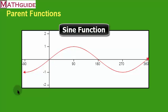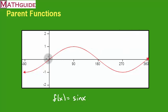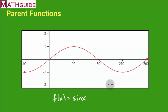Our next parent function is called a sine curve — a trigonometric function. It goes on forever to the left and to the right, with constant oscillation going up and down, up and down forever. It never gets higher than one and never lower than negative one. Specifically this is y equals sine of x. We could stretch it, shrink it, make it oscillate quickly, make it go very high or low, or shift it. The basic sine curve goes through the origin.